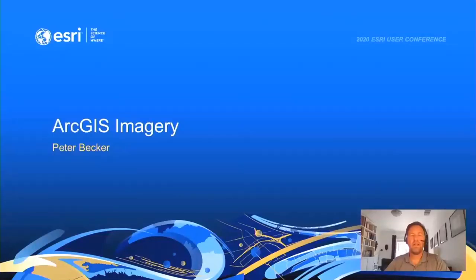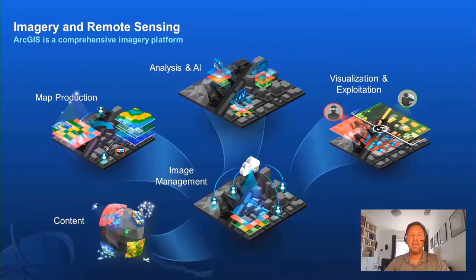Good afternoon. My name is Peter Becker. I'm the group product manager for imagery at Esri. It's great to have this opportunity to connect with you today at the New Zealand Esri user conference and present a quick overview of the imagery capabilities of ArcGIS. The imagery and remote sensing capabilities are foundational components of ArcGIS and integrate to create a comprehensive imagery platform. There are so many different capabilities that it's simplest to break this down into five key capabilities.